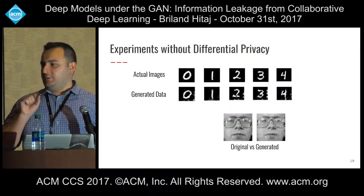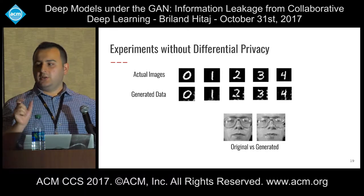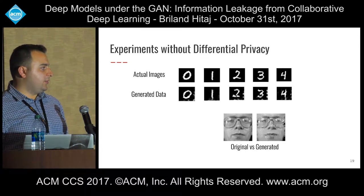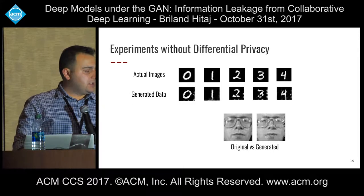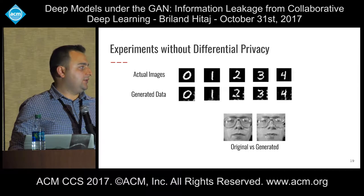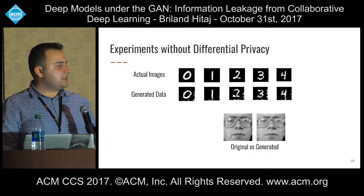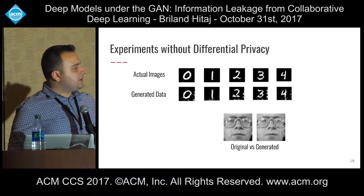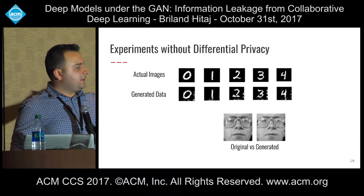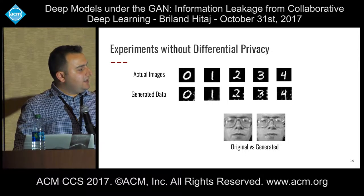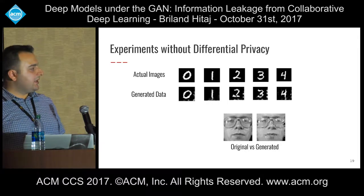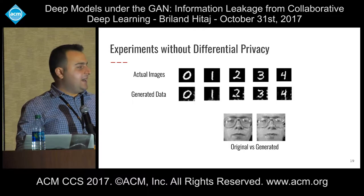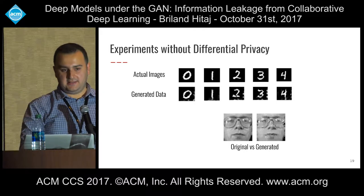The adversary then carries out the protocol as intended — selecting a portion of the parameters and uploading them to the parameter server. These parameters could also be obfuscated by differential privacy, with noise added prior to uploading. We show initial results from experiments without differential privacy, conducted on two datasets: the MNIST dataset and a face dataset. In the first row are the actual images and in the second row are the generated data — you can easily see the original and generated data are quite close to one another, and you can tell the victim had glasses, for instance.